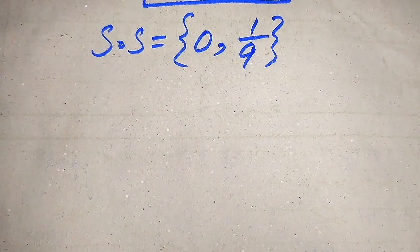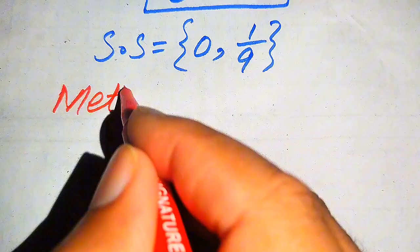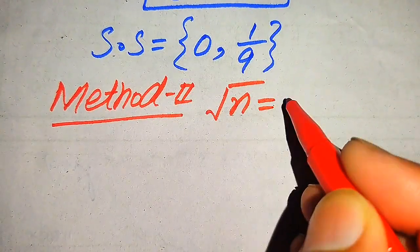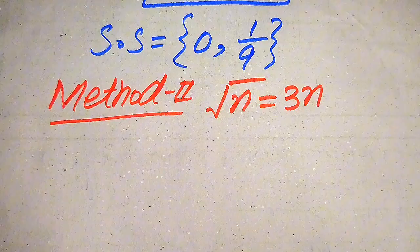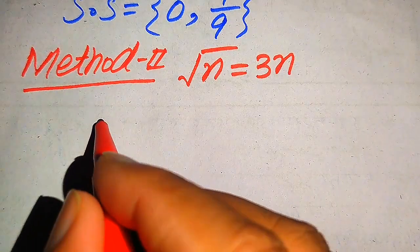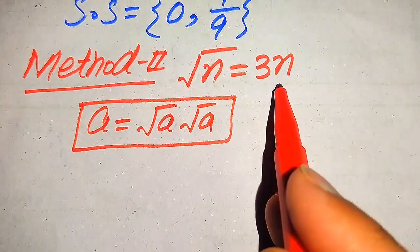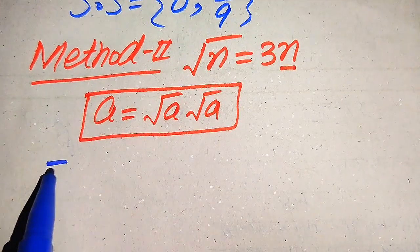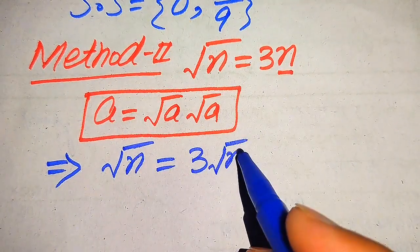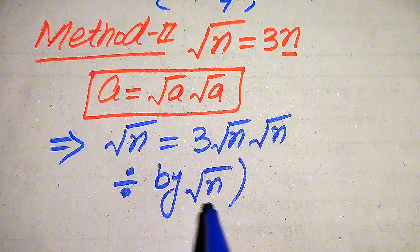Now we solve this problem by the second method. We copy down the given equation: square root of n equals 3 times of n. In this method, we focus on n and use the rule that a equals square root of a multiplied by square root of a. According to this rule, we rewrite n as square root of n multiplied by square root of n, so the equation becomes square root of n equals 3 times square root of n multiplied by square root of n.